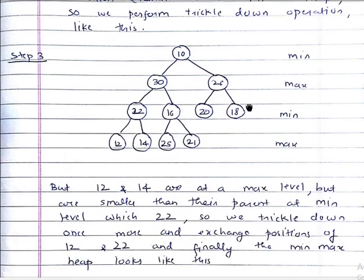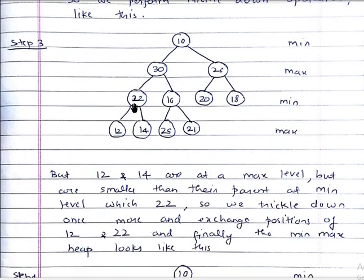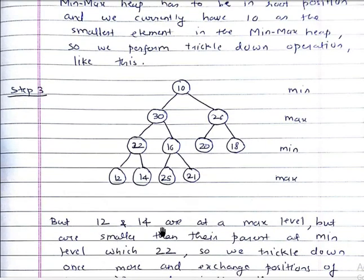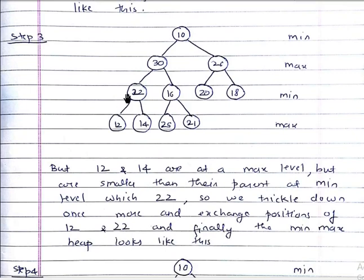Step three: we move 10 from its original position and place it at the root, then move 22 to the position of 10. This is the trickle-down operation, because this is at the min level and you compare only with min levels — not the max level. Now the problem is that 12 and 14 are at the max level and should be greater than their parent, but 22 is now at the min level as the parent of 12 and 14, and 22 is greater than 12 and 14, which is incorrect. So we perform the trickle-down operation one more time.